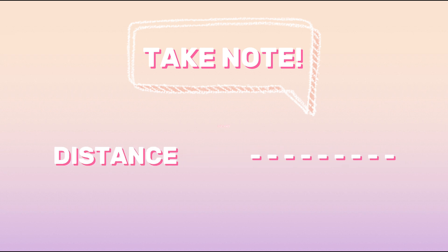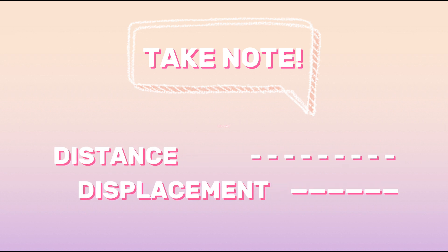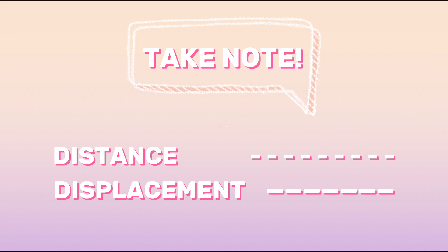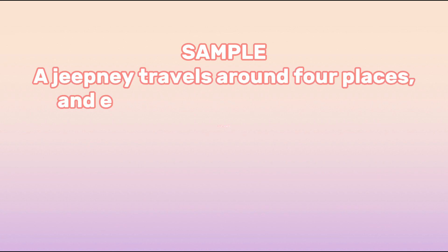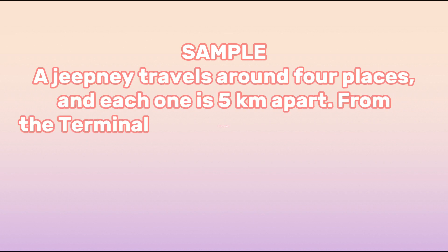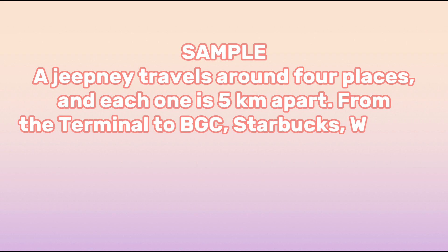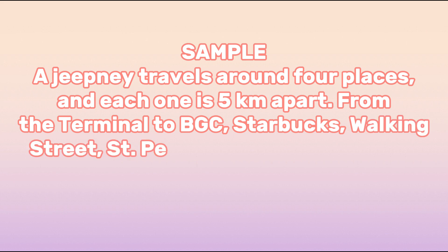Take note that the distance traveled by an object is represented as broken lines, and its displacement is represented by continuous lines. Let's have another example: a Jeepney travels around four places and each one is five kilometers apart — from the terminal to BGC, Starbucks, Walking Street, St. Peter, and then back to the terminal. Determine the distance and displacement.